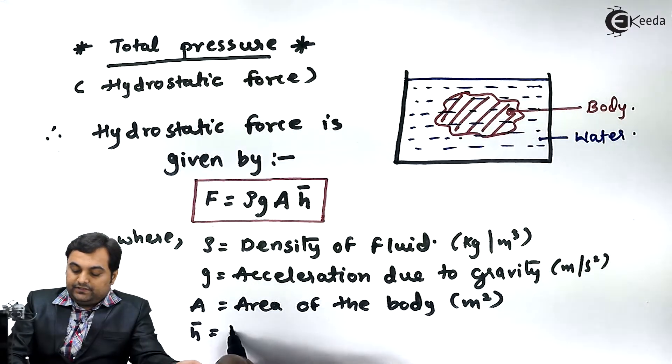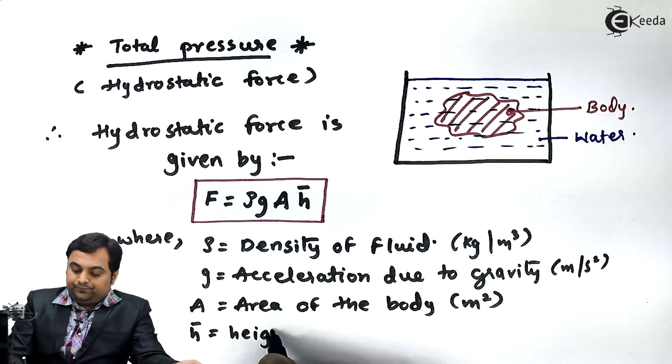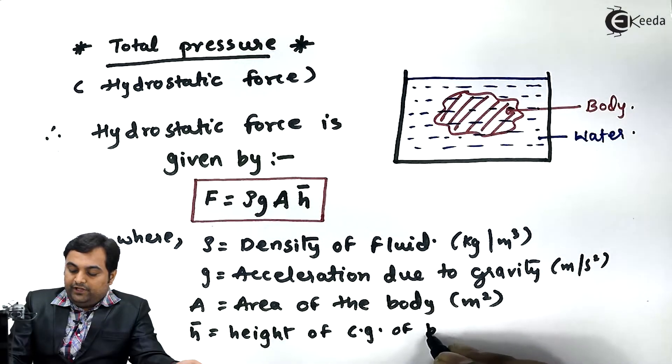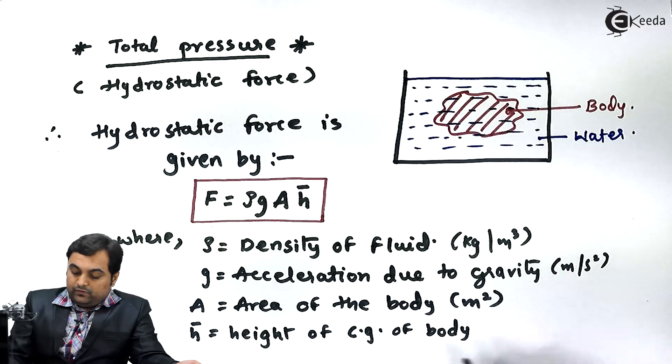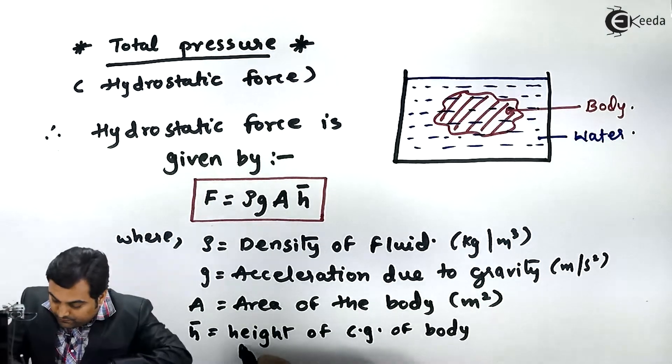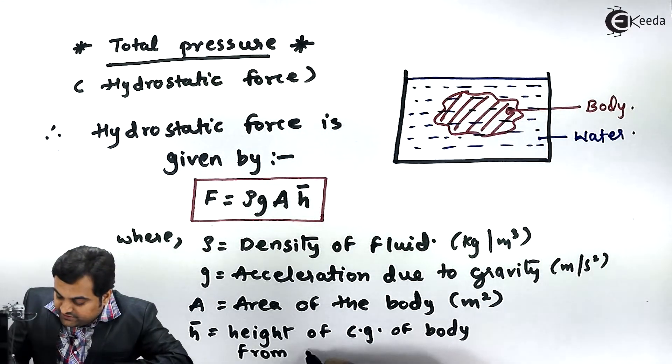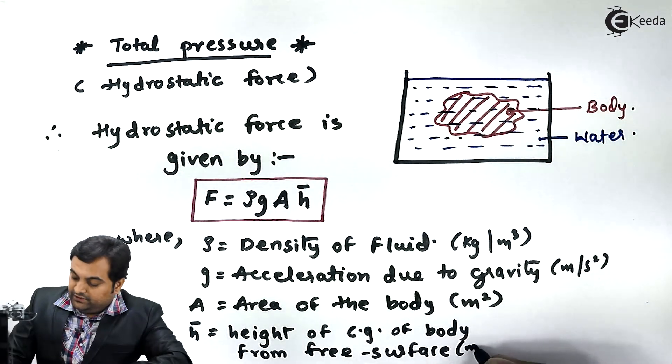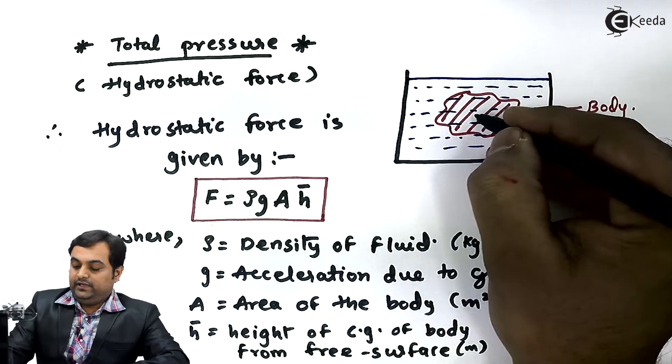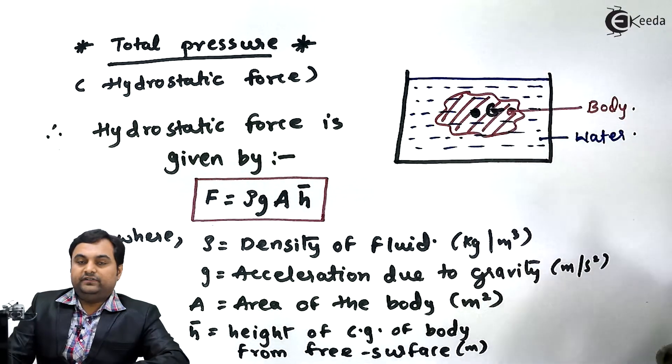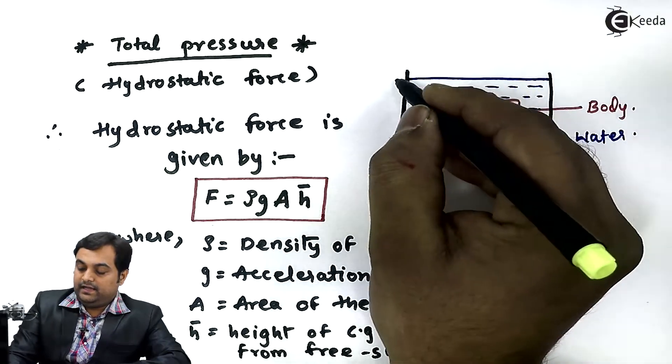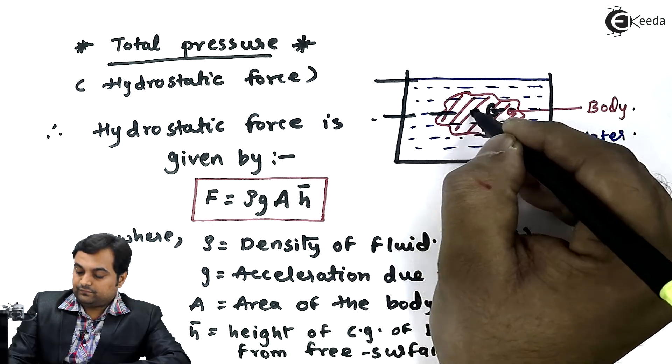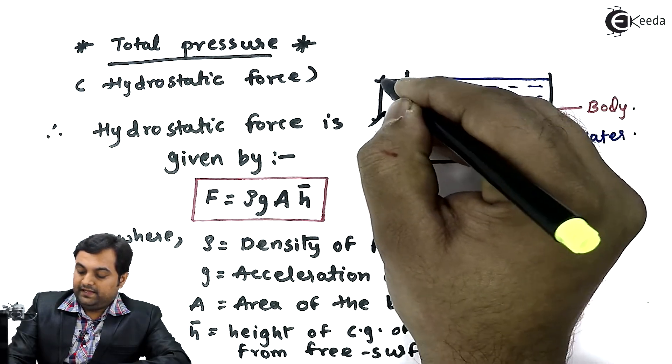And H bar is the height of center of gravity of body from free surface in terms of meter. If we have a body, in that we have a point called center of gravity denoted by G, and the distance of center of gravity from the free surface is denoted by H.